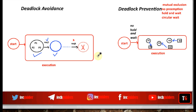We have seen in the previous video that by using a deadlock avoidance scheme the system remains in a safe state always and will avoid moving to an unsafe state, so those requests will not be granted that will move the system to an unsafe state. A method used for deadlock avoidance should be capable of determining whether a particular state is a safe state or an unsafe state.